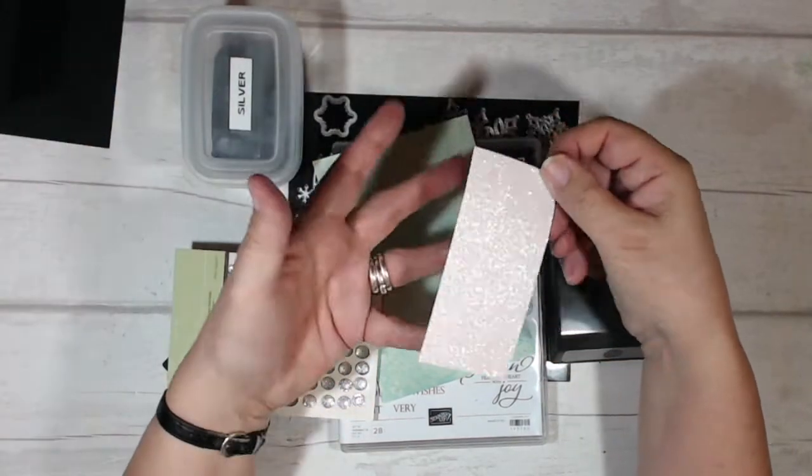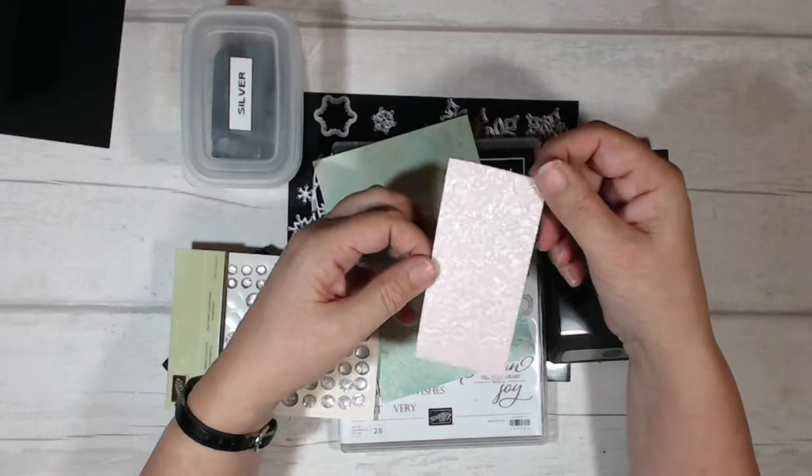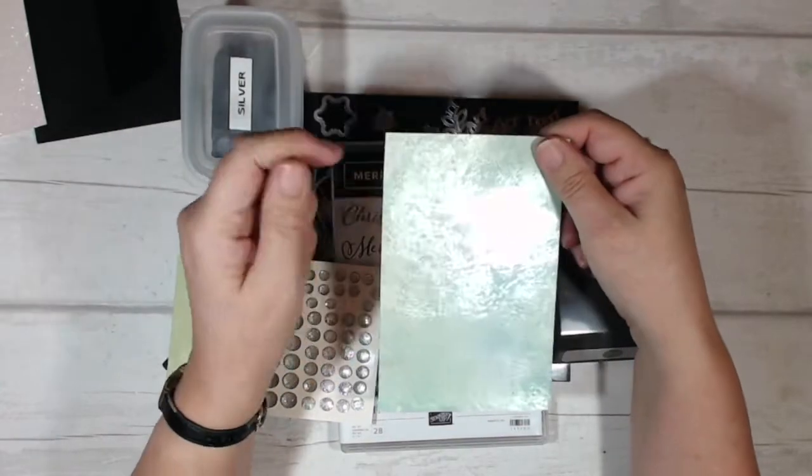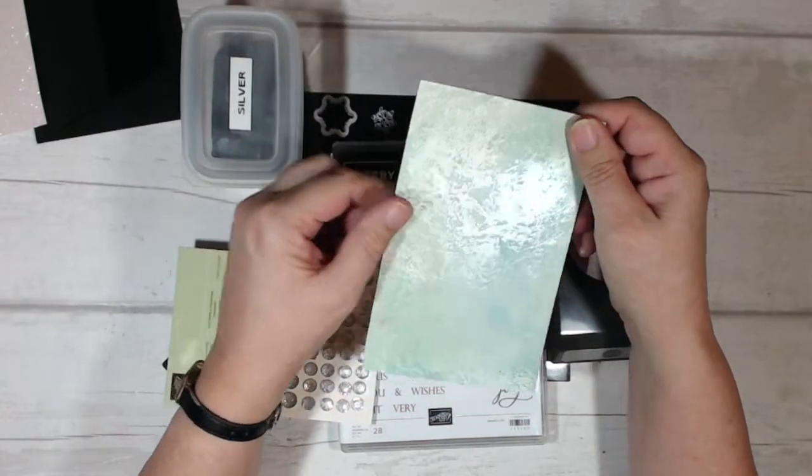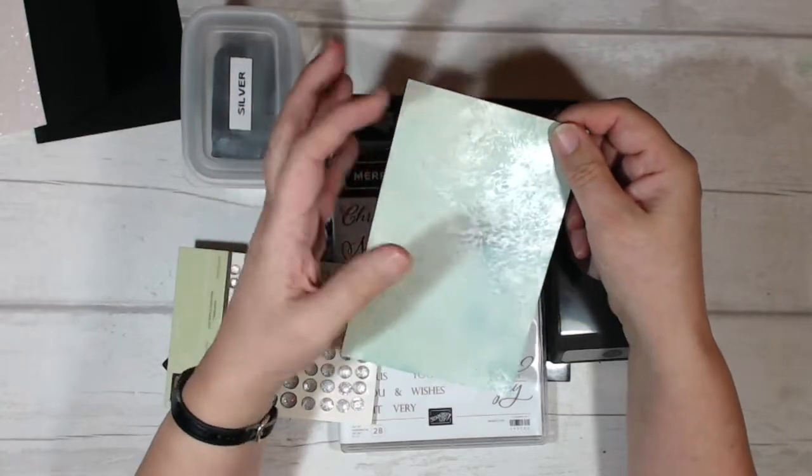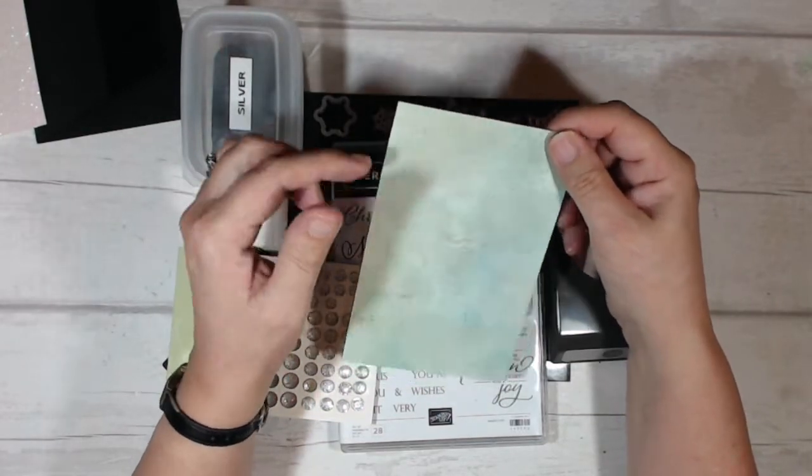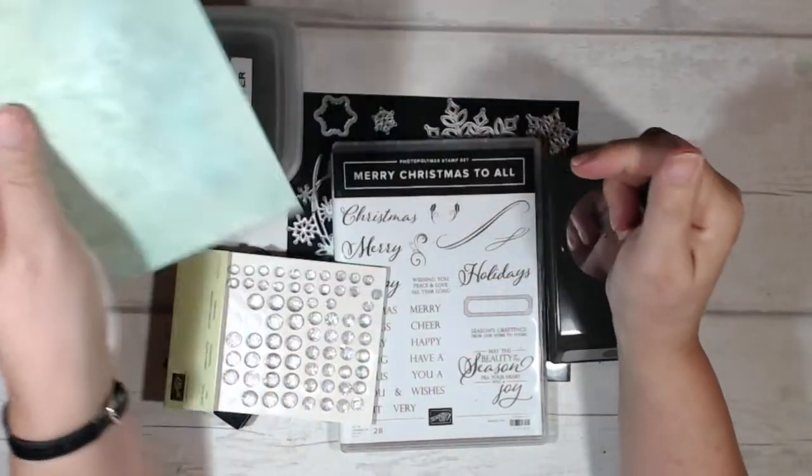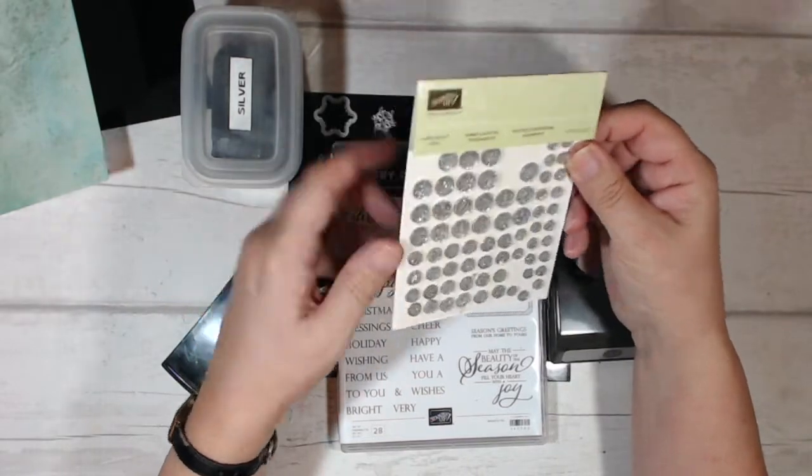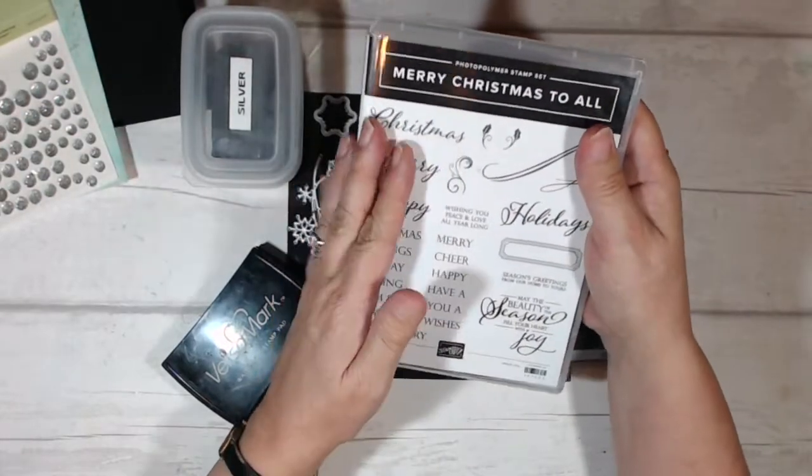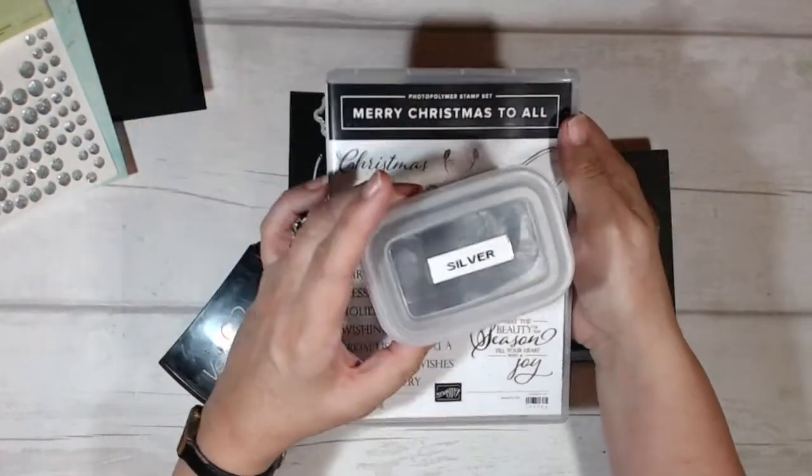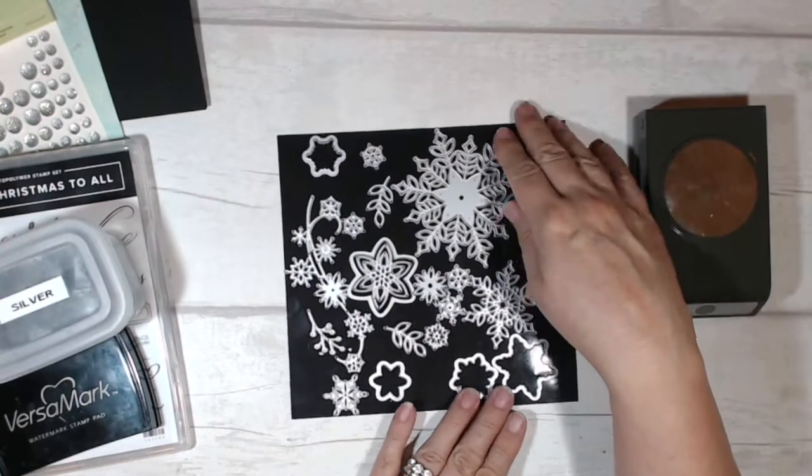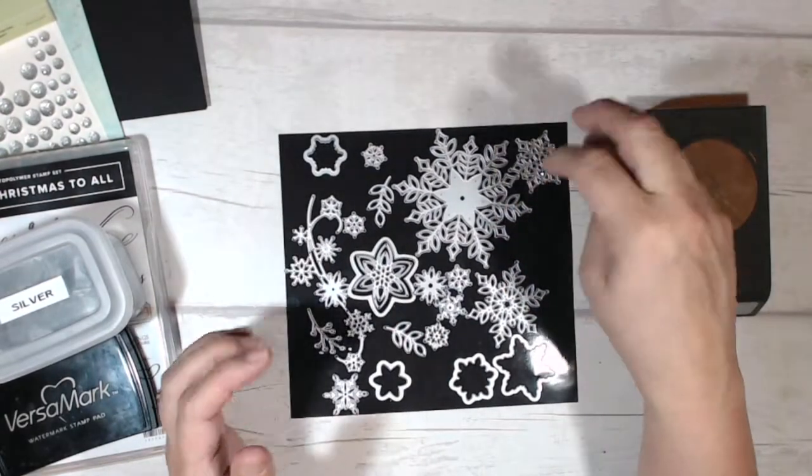I know it doesn't show up terribly well on the video, but trust me, it's lovely with a flocked surface. This does show up well though—this is a little bit of the dazzling diamonds glimmer paper. This started off as glossy white card and I've treated it with the mother of pearl technique. I have my clear faceted gems for a bit of bling, and for stamping I have Merry Christmas to All, silver embossing powder, and Versamark ink.